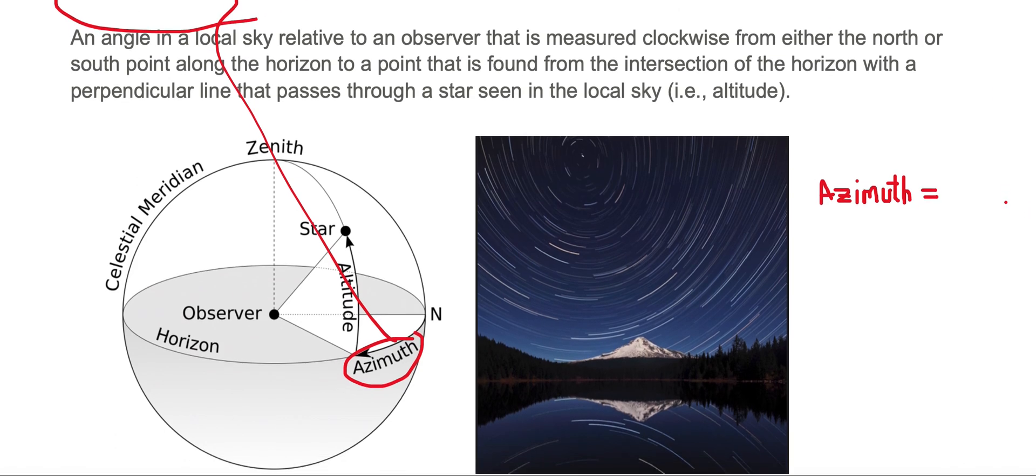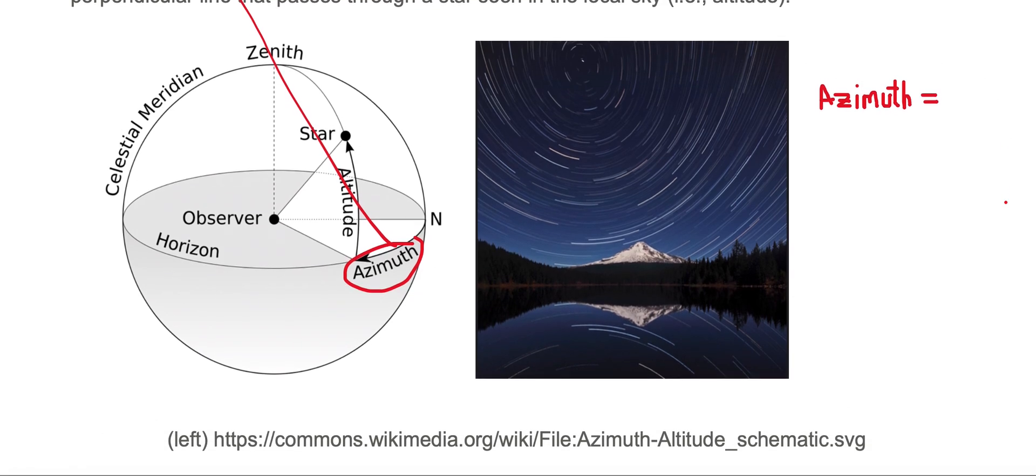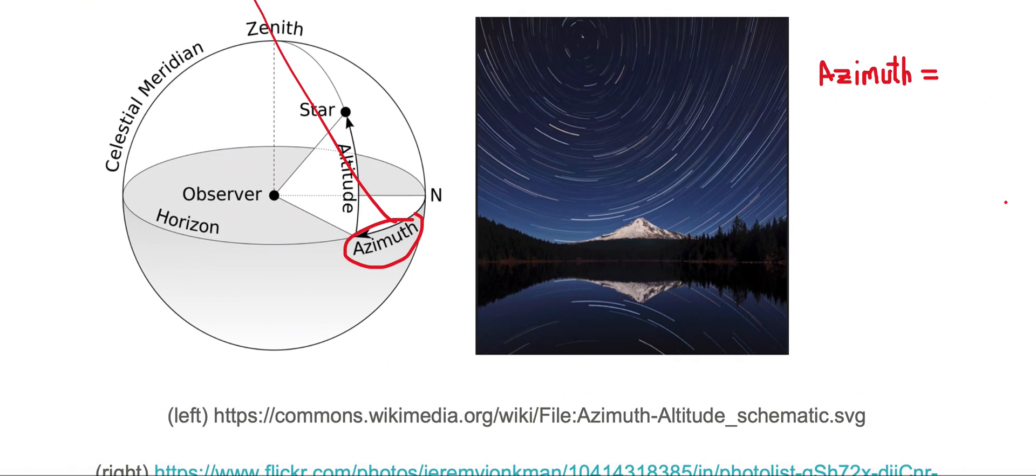Let's do an example. On the right-hand side, we are looking at Mount Hood, and this here is Lake Trillium, and you're looking over Lake Trillium to Mount Hood, and you're looking at the north pole star, which I'll color with a red dot there. You're also looking at star trails that appeared for stars to be moving in the counterclockwise direction.